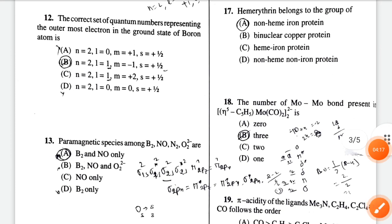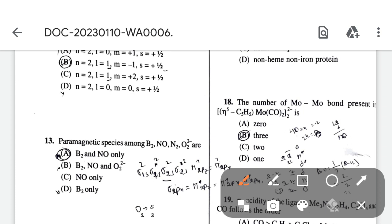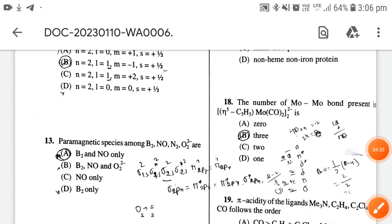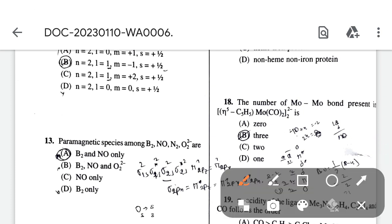Paramagnetic species among B₂, NO, N₂, O₂²⁻: we have to consider the molecular orbital electronic configuration and fill electrons accordingly. The correct option is option A.